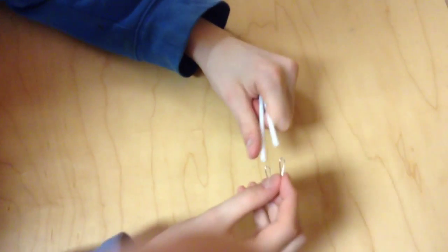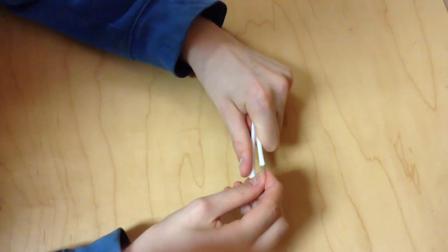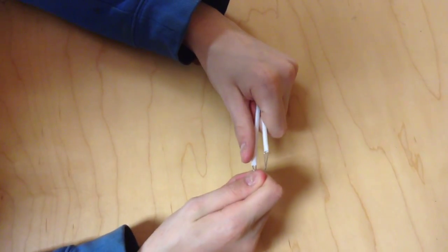Step 3. Take the paper clip and the straw and put each end of the paper clip into the straw, like so. Make sure they stick when you let go.